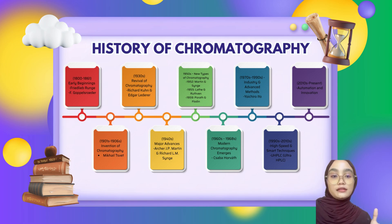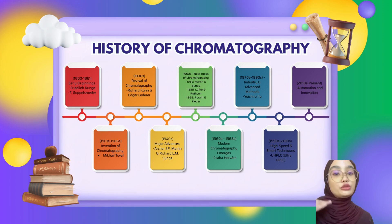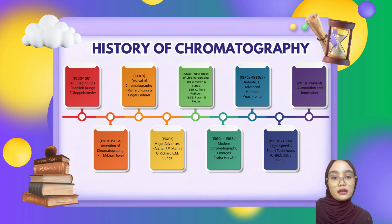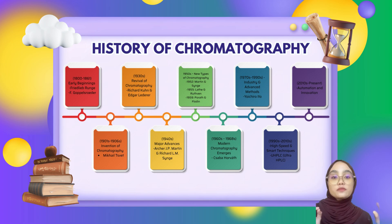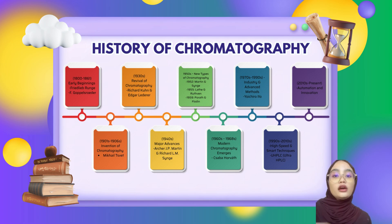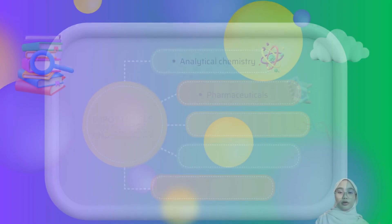From 1970 to 1990, chromatography was used more widely in industry. Yoichiro Ito introduced advanced techniques like centrifugal chromatography. Later, new technology made chromatography faster and smarter. UHPLC, or ultra-high-performance liquid chromatography, was developed for better results.